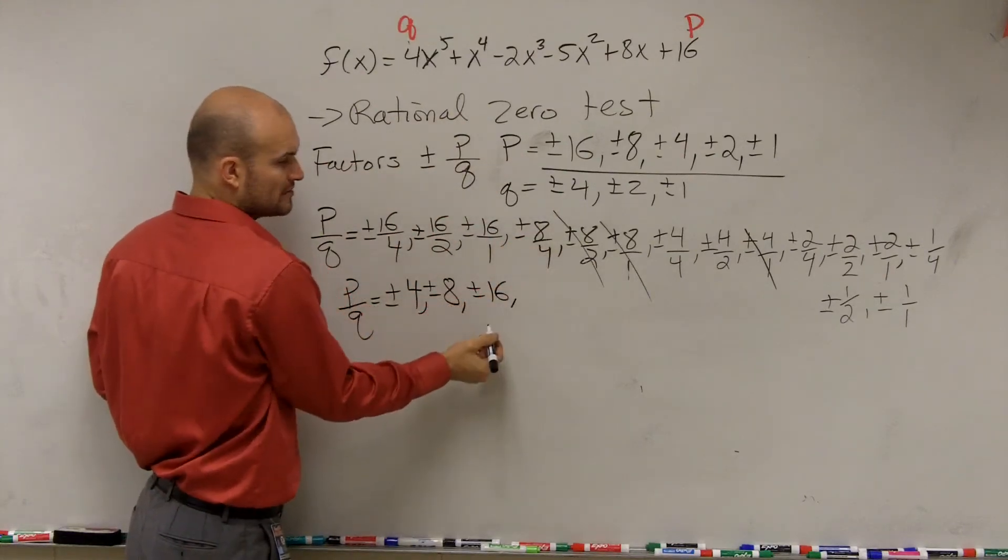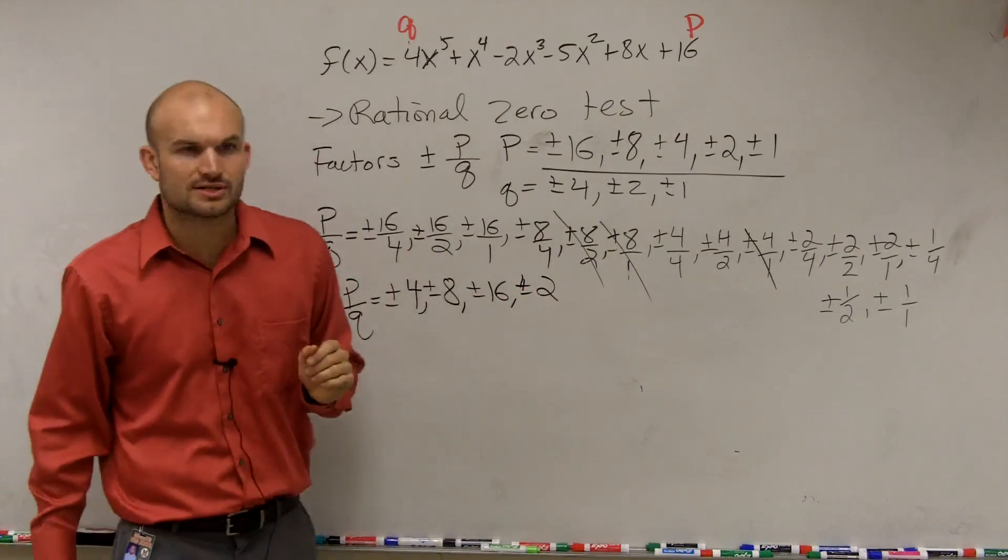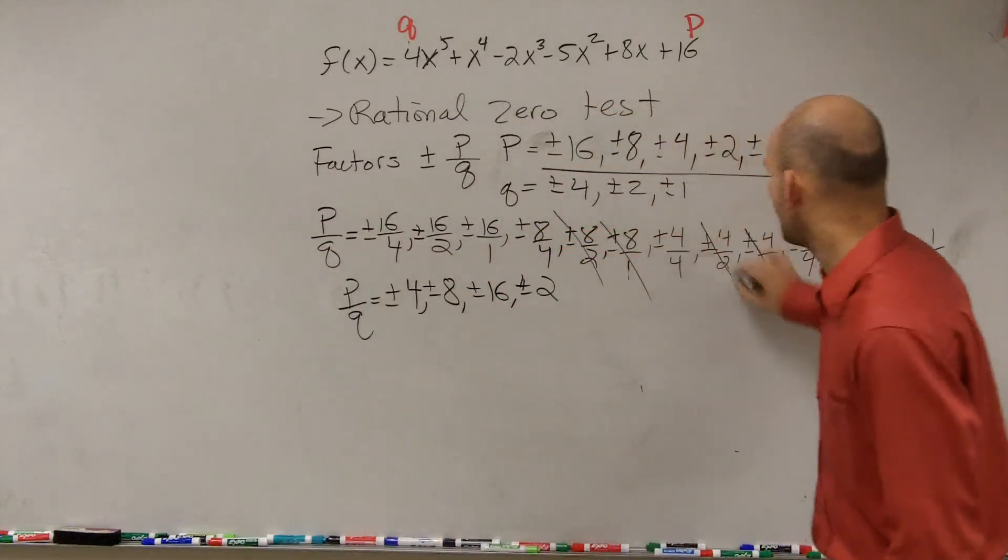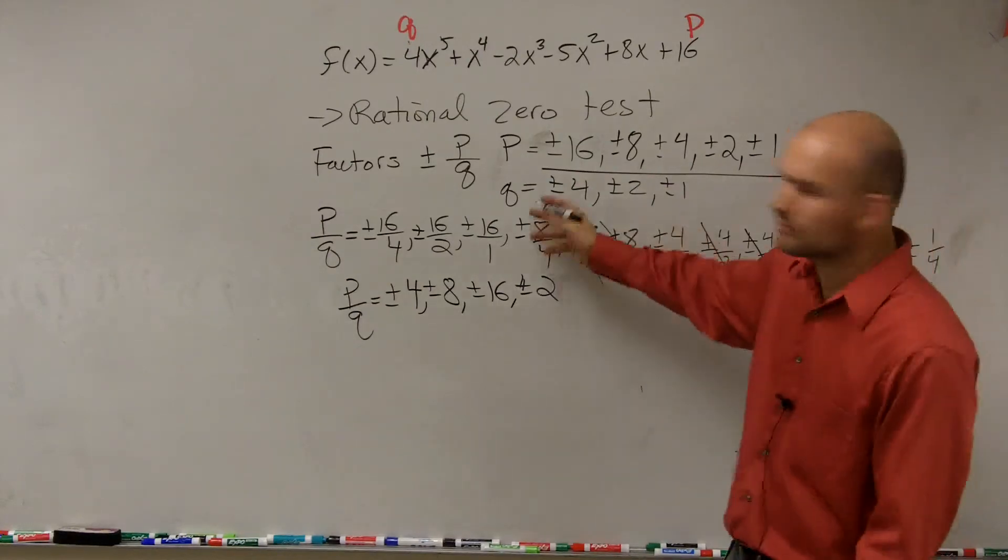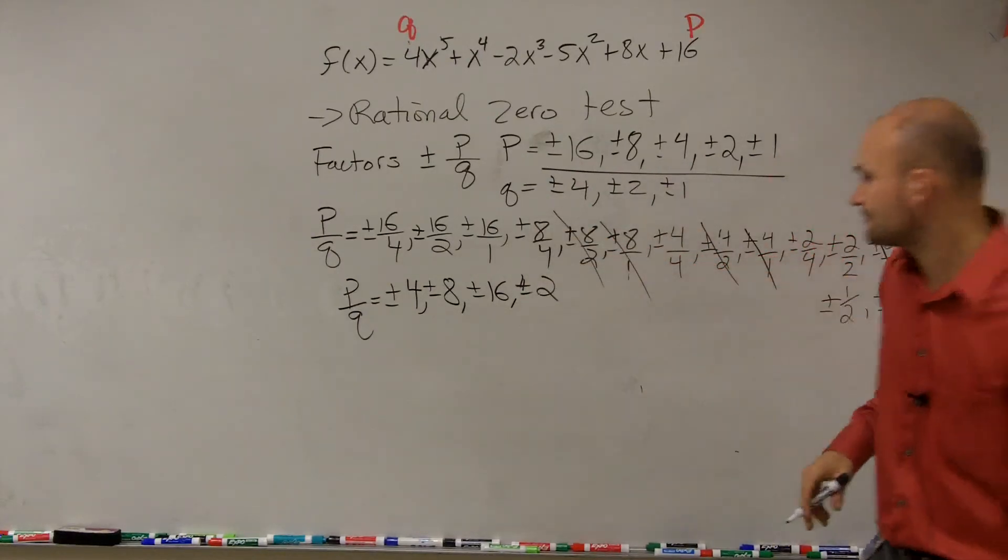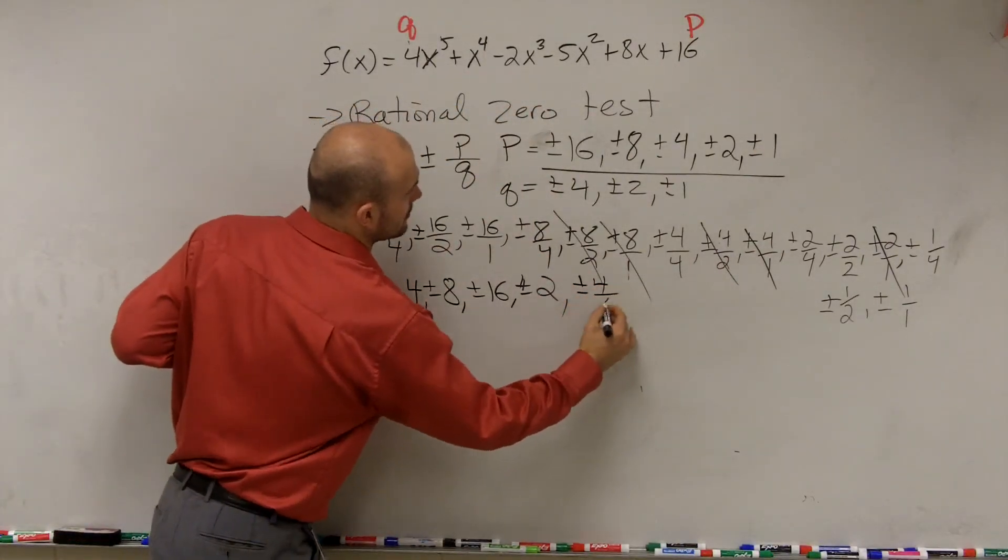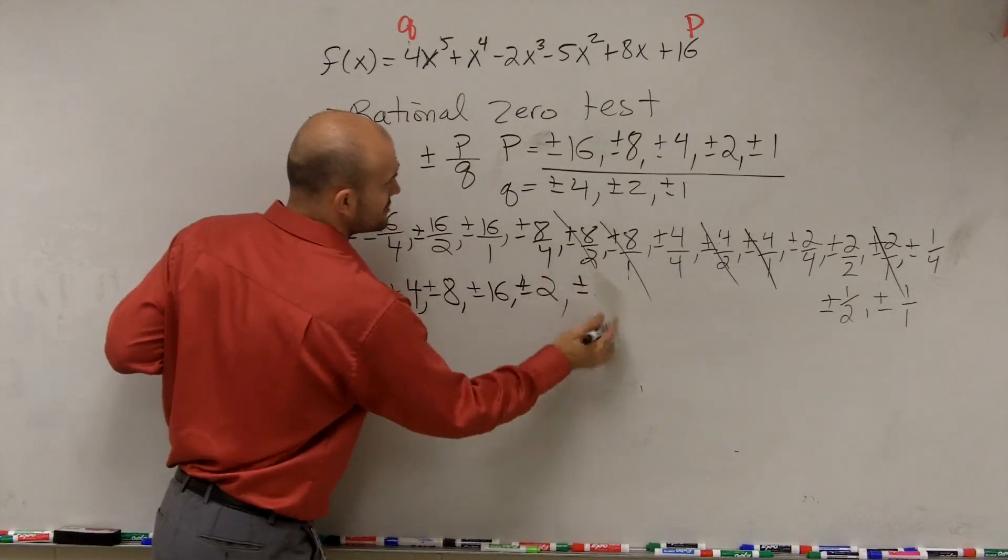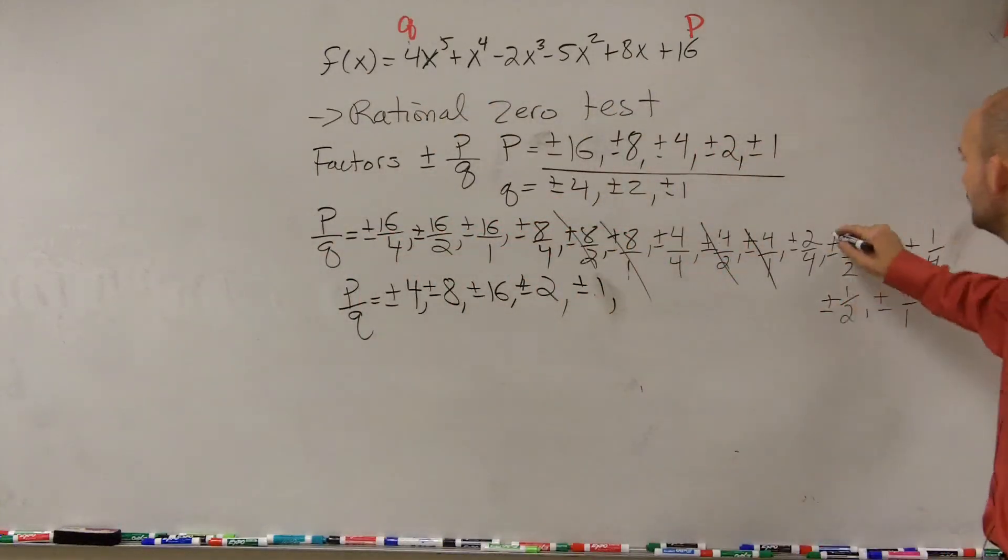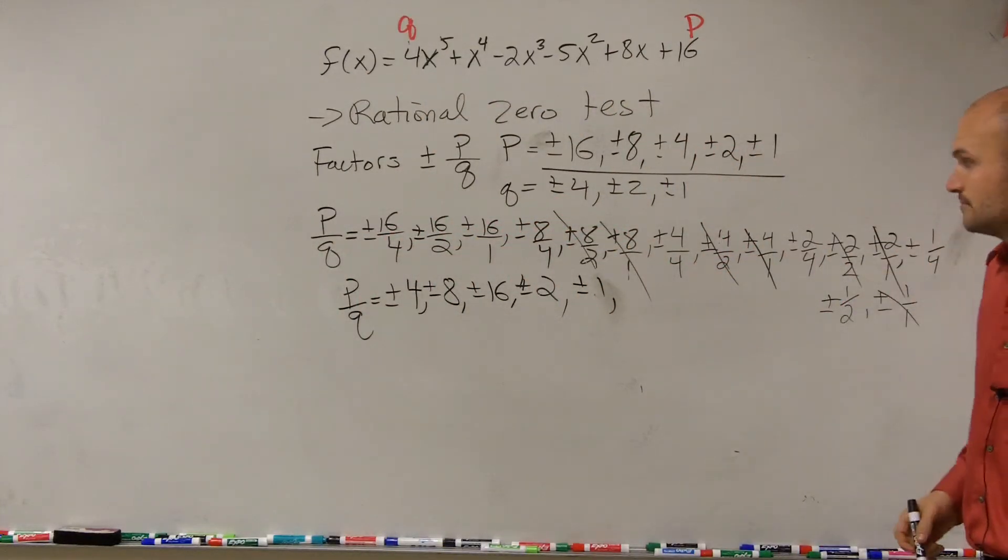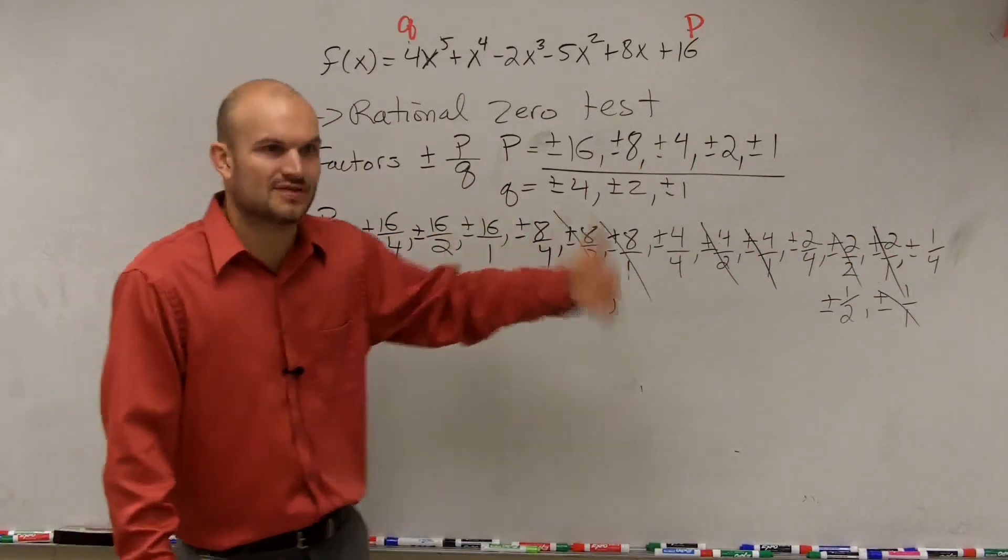Then we could do 8 over 4 reduces down to 2, plus or minus 2. Well do we have another problem where it's going to be plus or minus 2? Yeah, we have plus or minus 4 over 2 and plus or minus 2 over 1. Then let's do plus or minus 4 over 4, which we know reduces down to 1. So therefore, let's see where else do we have that. Well we have 2 over 2 which goes to 1, and 1 over 1 which goes to 1. So you guys kind of see how we're knocking out a lot of these extra answers that are the same thing.